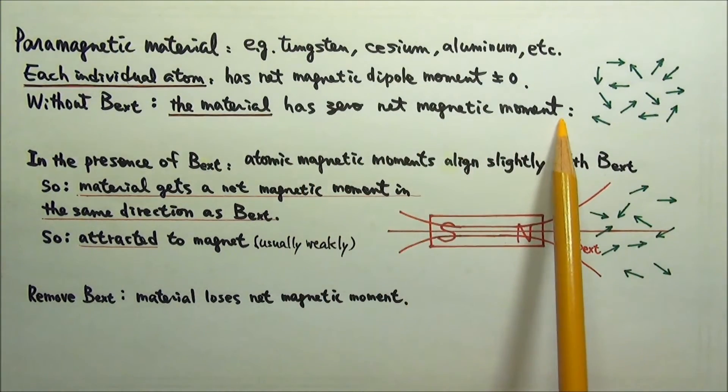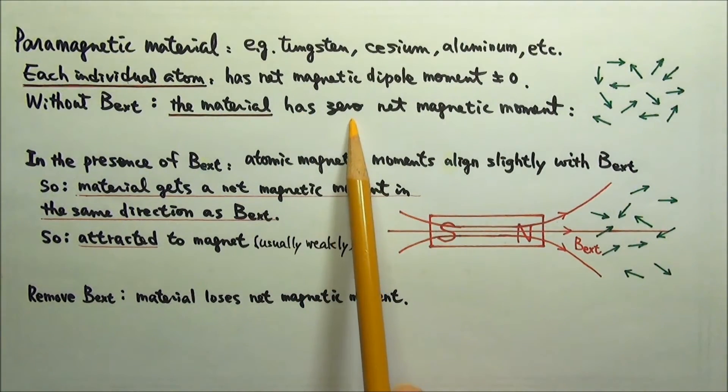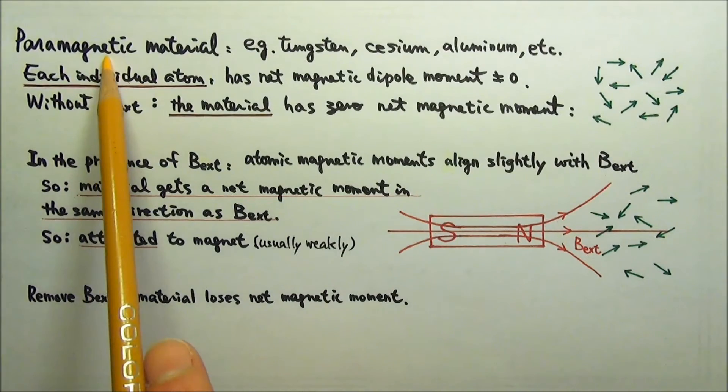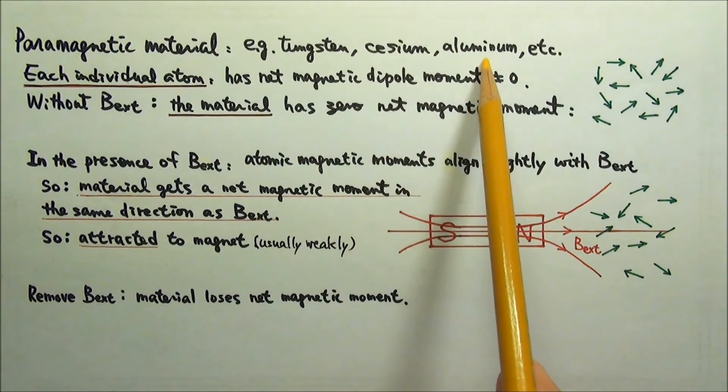So the net magnetic dipole moment of the material is zero. Examples of paramagnetic materials include tungsten, cesium, and aluminum.